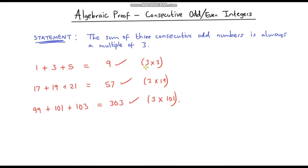It seems to work for these three examples, but does it work for every possible combination of three consecutive odd numbers? To do this we need to represent an odd number using algebra. Let's first think about even numbers. All even numbers are multiples of 2, so we can say 2n is an even number — it doesn't matter what we put in for n, as multiplying by 2 makes it even.